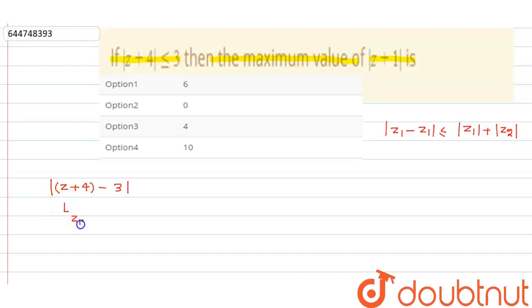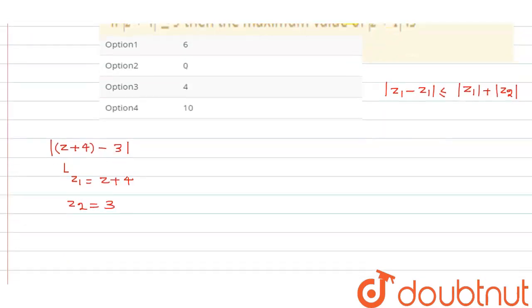So if I assume that z1 is what, z plus four, and z2 is what, z2 is equal to three. That means what, we can say that mod of z1 minus z2 is z1 minus z2 less than equal to mod of z1 plus mod of z2.